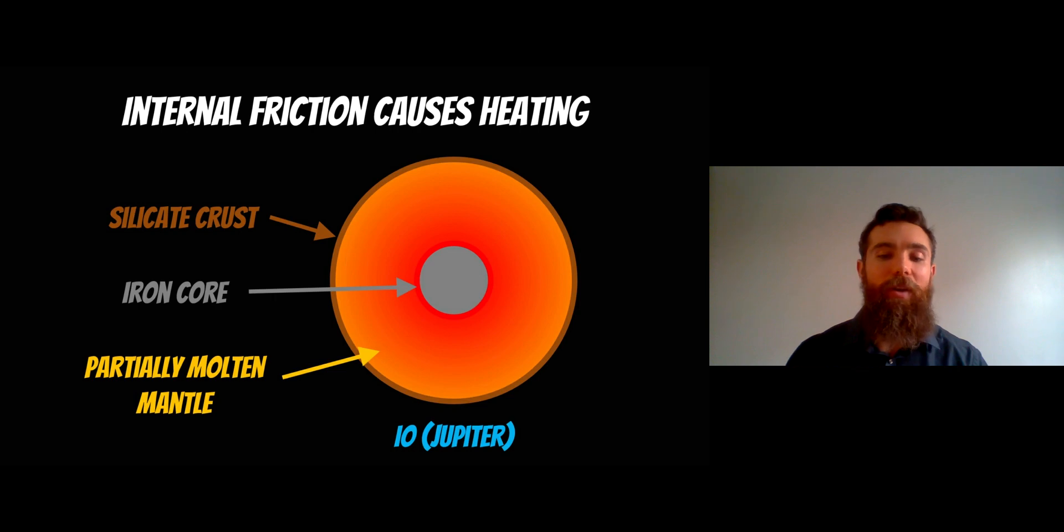A good example is Io, one of Jupiter's moons. It's one of the inner Galilean moons, and the basic internal structure is that it has a silicate crust.